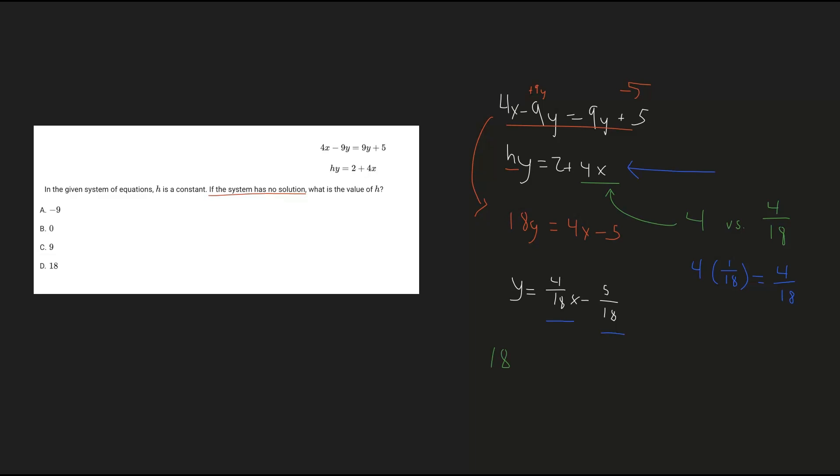So if h was 18, then we get 18y equals 2 plus 4x. And so now when we isolate for the y value, divide both sides by 18, we get y equals 2 over 18 is 1/9 plus 4 over 18x.